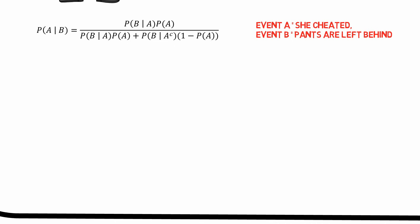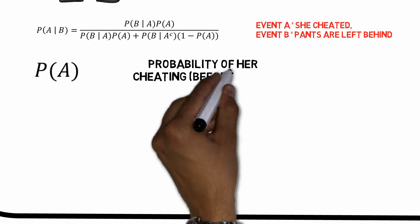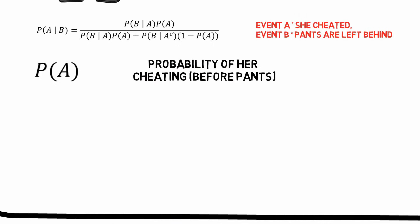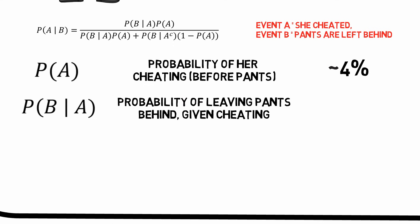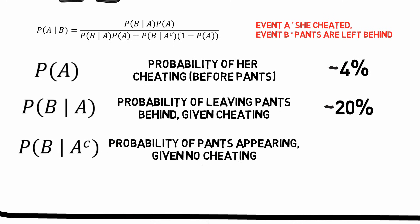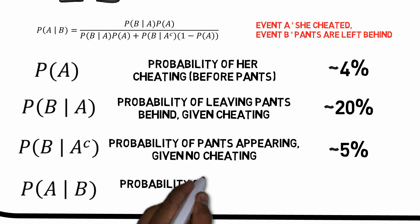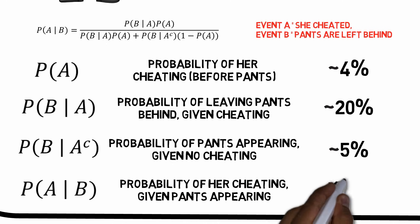You must make some assumptions regarding three different events. Firstly, what would you estimate that the probability of her cheating on you would have been before you found this new piece of evidence? Let's say that it's 4%, apparently that is some kind of national average. Secondly, if she really is cheating on you, how likely is it that the guy would forget his pants? Well, not too likely, probably. Let's say 20%. Thirdly, what's the probability that these pants are here if she's not cheating on you? Perhaps she has a brother who visits sometimes.